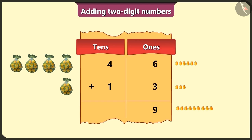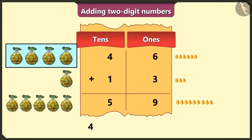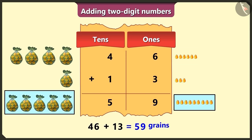Now in the tens box, the numbers 4 and 1 will add up to 5. So how many grains do we have here in total? Here, if we add 4 tens and 6 grains to 1 tens and 3 grains, then we get a total of 59 grains.